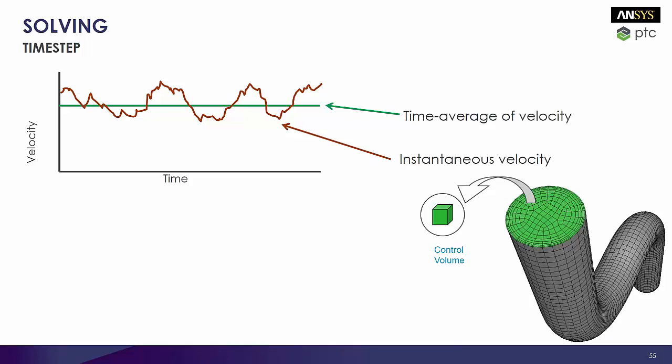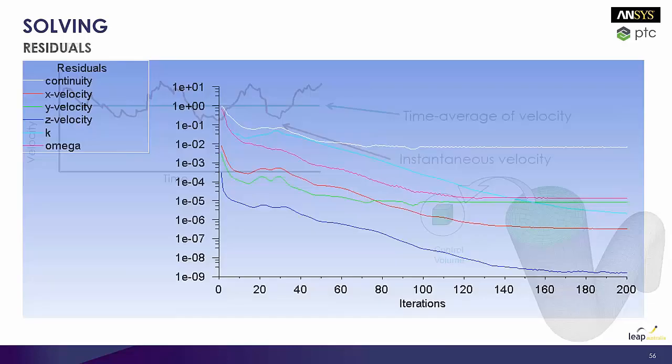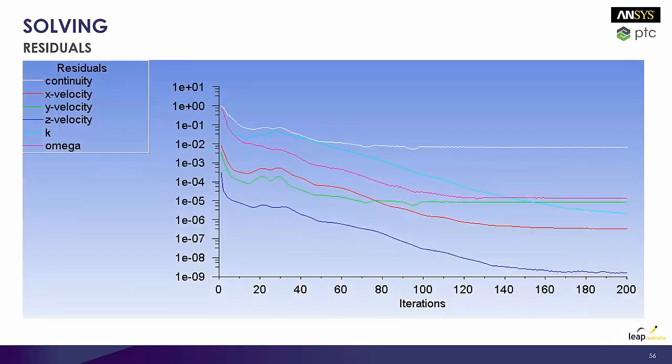So again, we've got the instantaneous, so what's happening in real life, and we want to figure out exactly what the average solution would be. So what we need to do is that we need to take time steps, and the solver, the courant number, allows us to take a certain amount of time steps in order to average that flow out. Again, just like anything, if we're not taking enough time steps, it just means we're not going to be sampling the data enough.